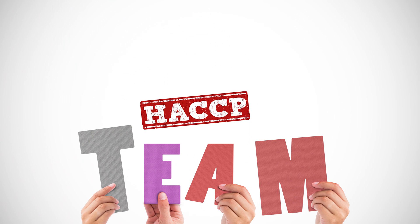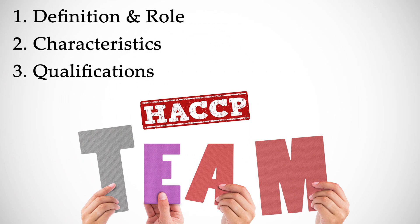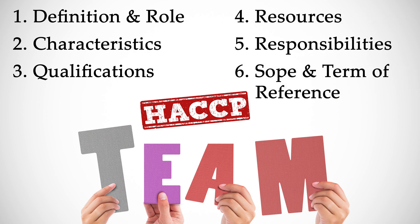In today's video we will talk about six things. Number one is the definition and the role of the HACCP team. Then the second one is the characteristics of the team, then the qualification of the team members, then the resources required by the team, then their responsibilities, and the last one is the first thing the team has to do — which is to determine the scope and term of reference for the HACCP project.